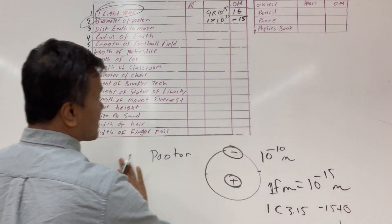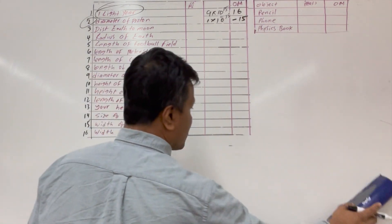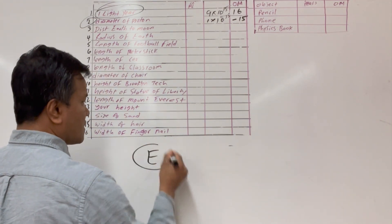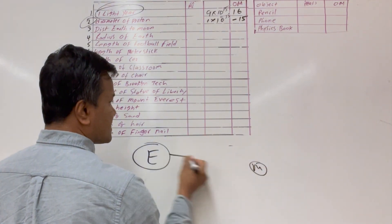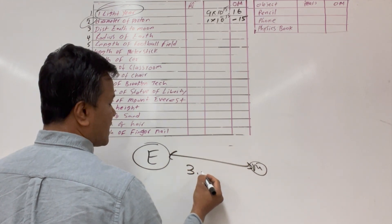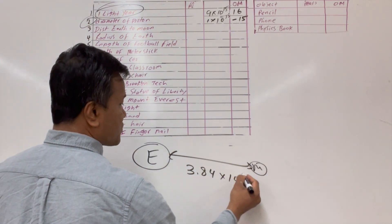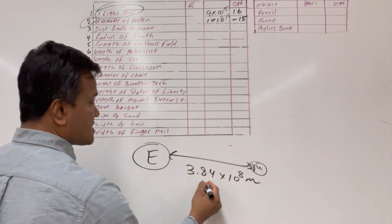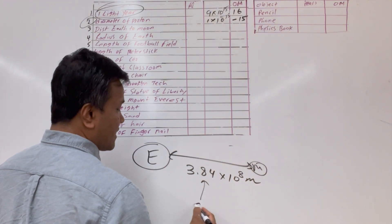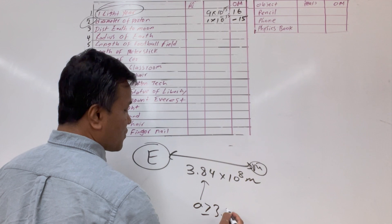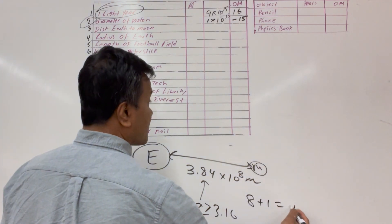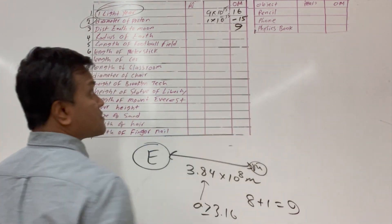The distance from Earth to the Moon is 3.84×10⁸ meters. A equals 3.84, which is greater than 3.16, so 8 plus 1 gives an order of magnitude of 9.